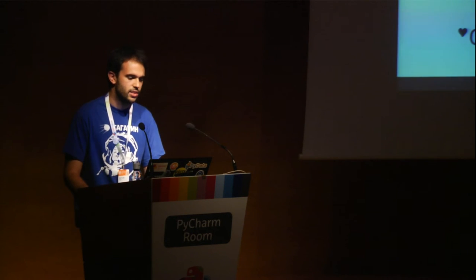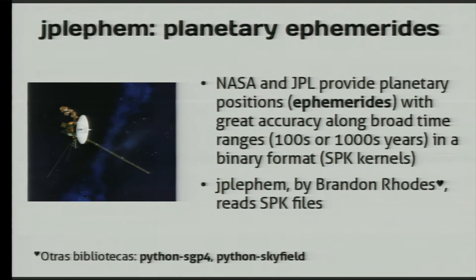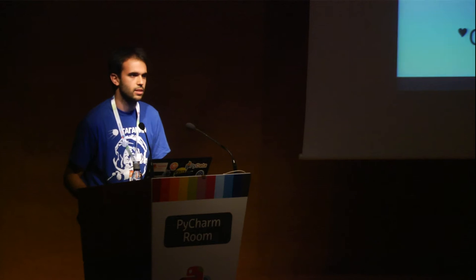The second dependency is JPL-IFM, a library by Brandon Rhodes, who is one of my favorite Python developers. NASA and the Jet Propulsion Laboratory provide planetary positions and velocities over very broad time ranges spanning hundreds or thousands of years. They provide them in a binary format called SPK, and with this library I can take that data and know exactly where a planet is going to be in the year 3000.